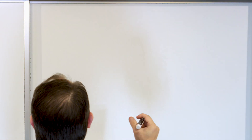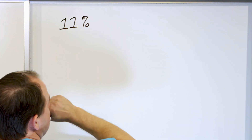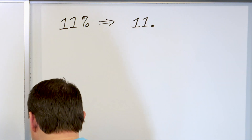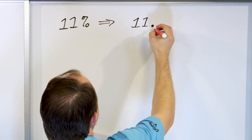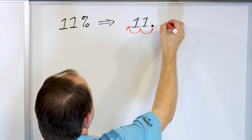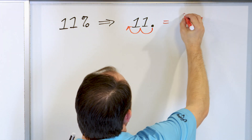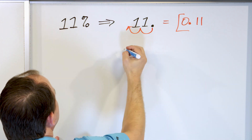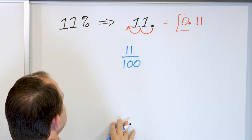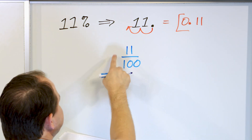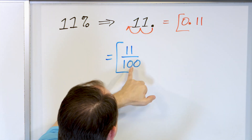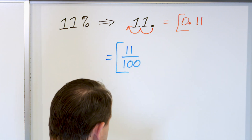Now we'll crank through the remaining problems. Let's convert 11%. For the decimal: write 11 with an invisible decimal at the end, divide by 100 by moving the decimal two spots to the left — that gives 0.11. For the fraction: write it as 11 over 100. We can't simplify this any further, so 11% equals 0.11 as a decimal and 11 over 100 as a fraction.